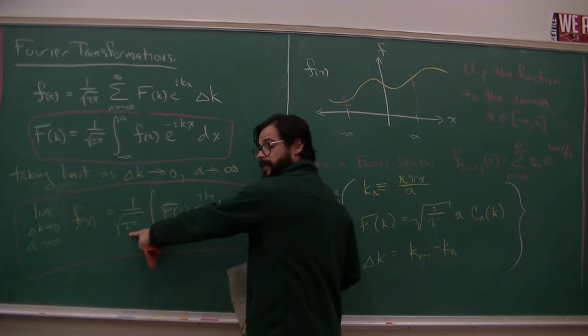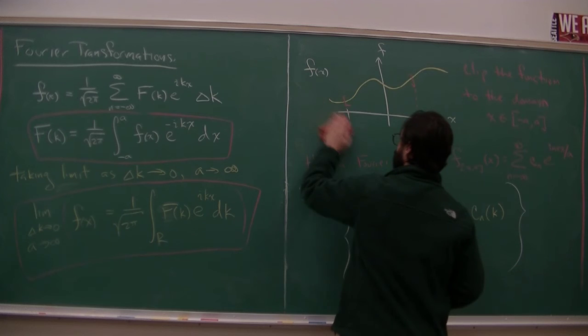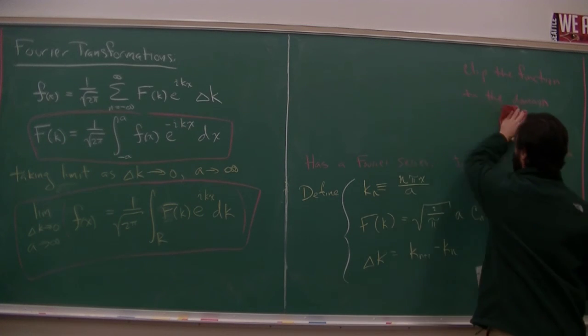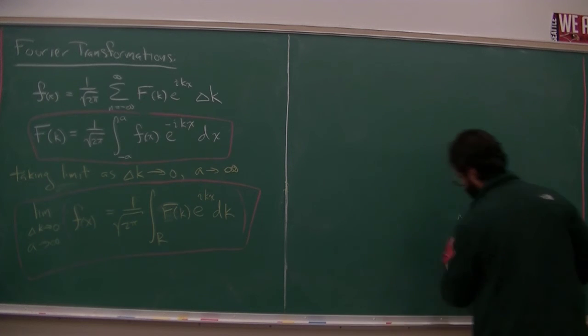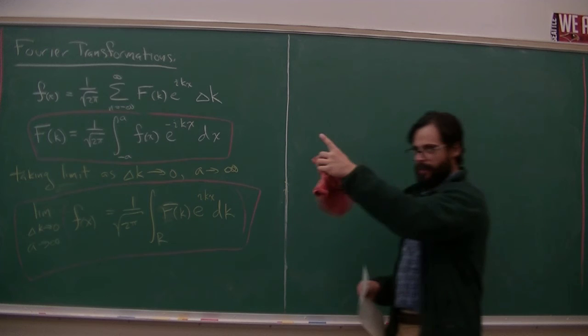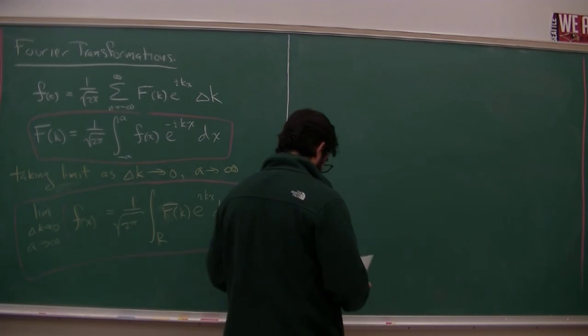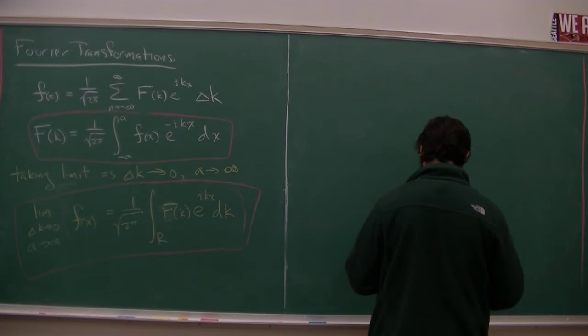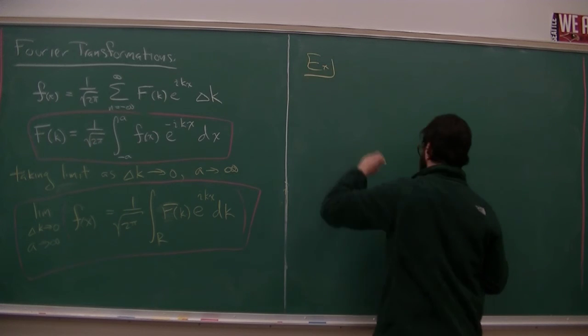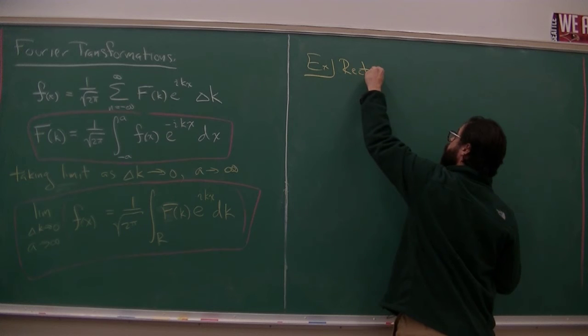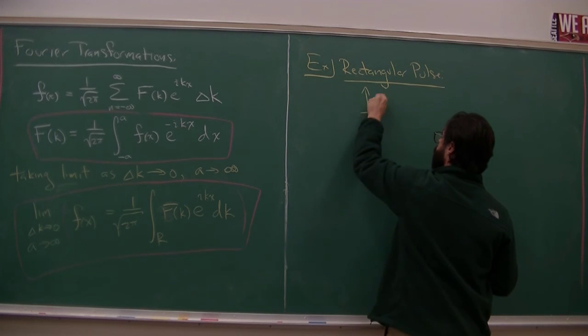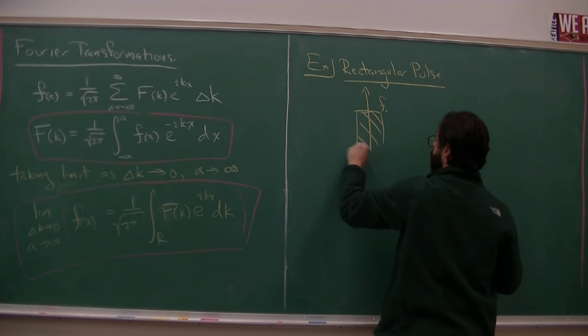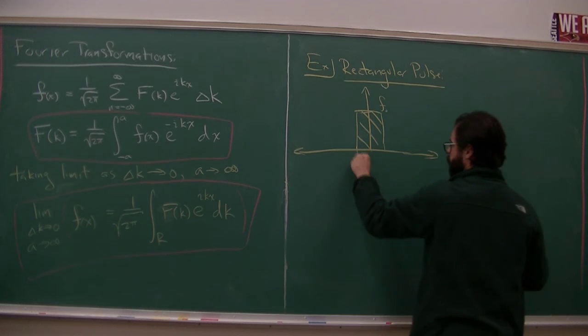One thing about this is that this is a convention. Like this 1 over root 2 pi you might not see everywhere. I think that's the convention that's generally used in quantum mechanics, which is why we're using it here. But you might see 1 over root pi and 2 root 2 upstairs at various points. I'll show you some demos with this. You can see Heisenberg's uncertainty principle in here. But I do want to do an example.